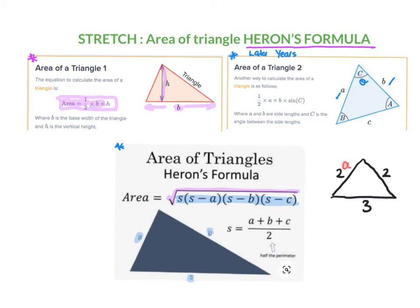Doesn't matter which one you label, but you just call them A, B and C. But you can see in the formula, they've got this S as well. So what is S? We need to work out S first, and this is how we find out S. So in my example here, S would be I add up all the sides, which is 2 plus 2 plus 3, and I divide by 2.